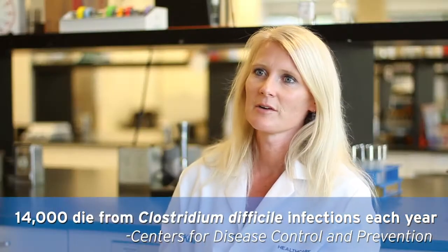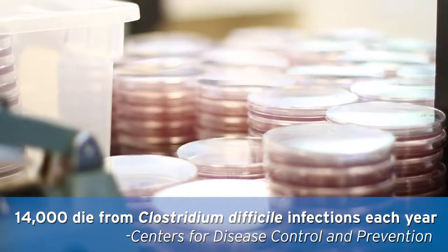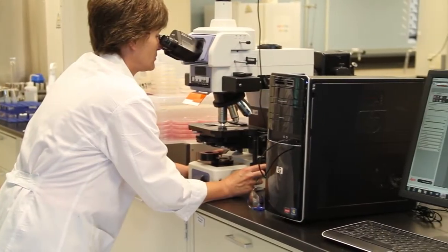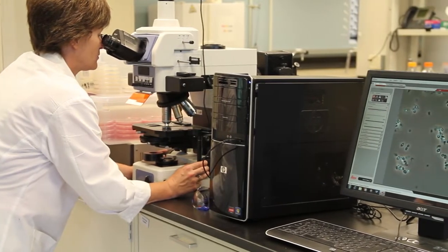C. difficile is very difficult for the reason that it has two forms. It's got a vegetative form which dies very quickly in the presence of oxygen, and it also has a spore form. The spore form is extremely resistant.